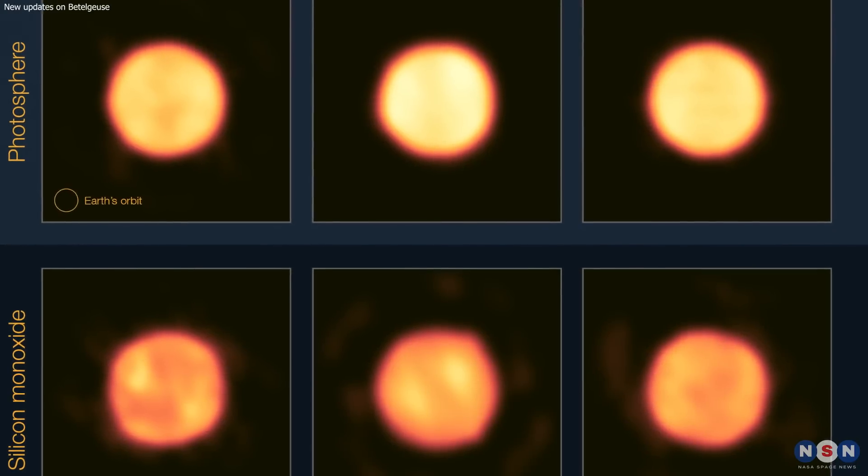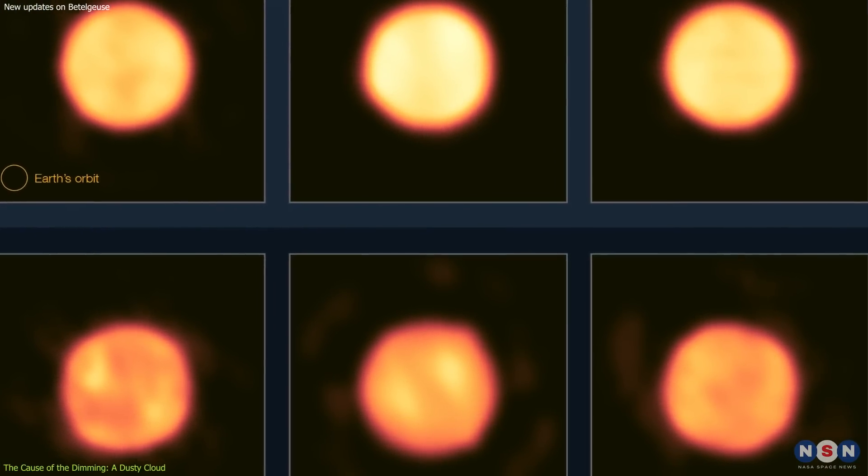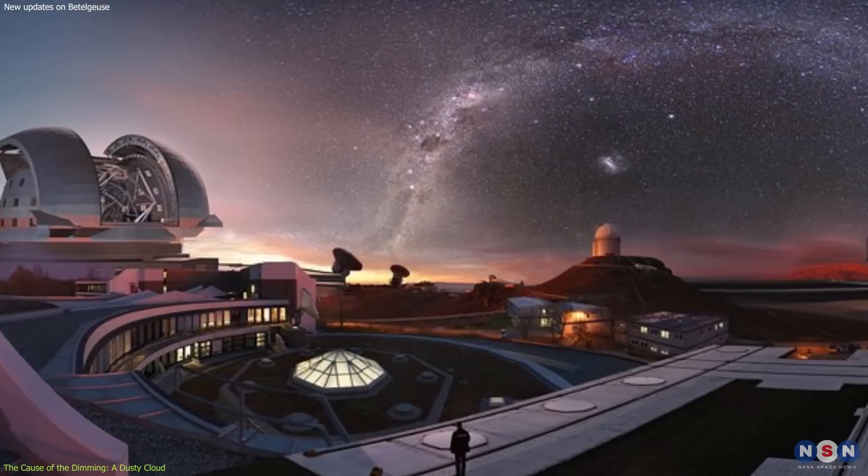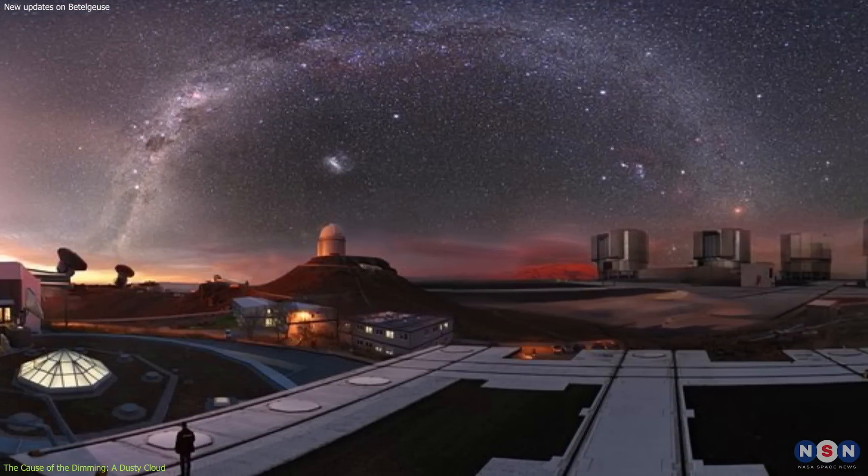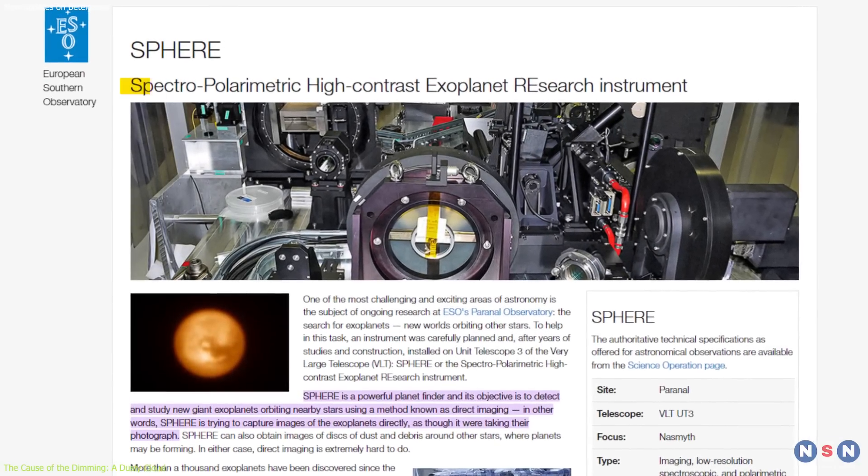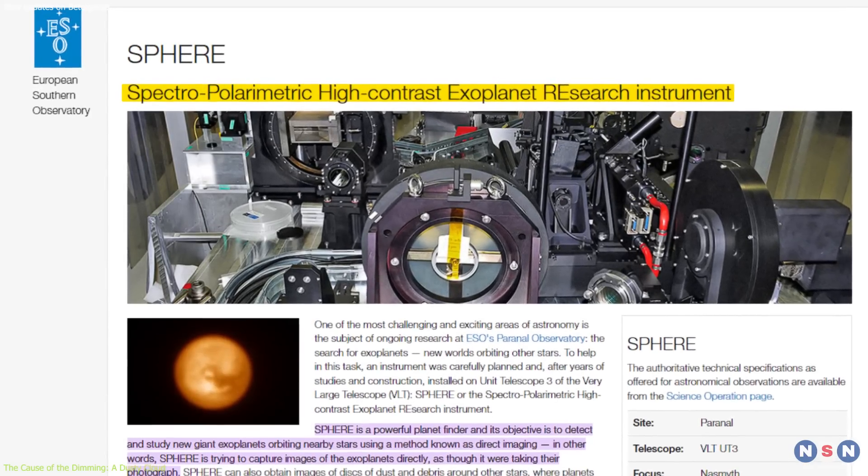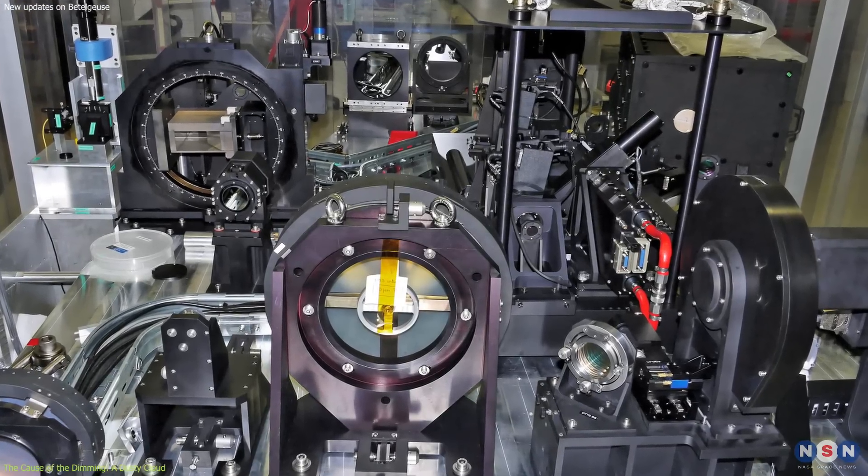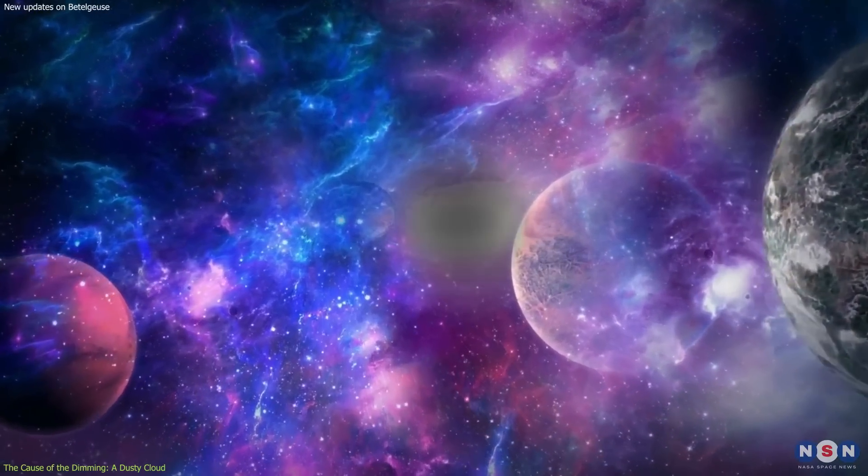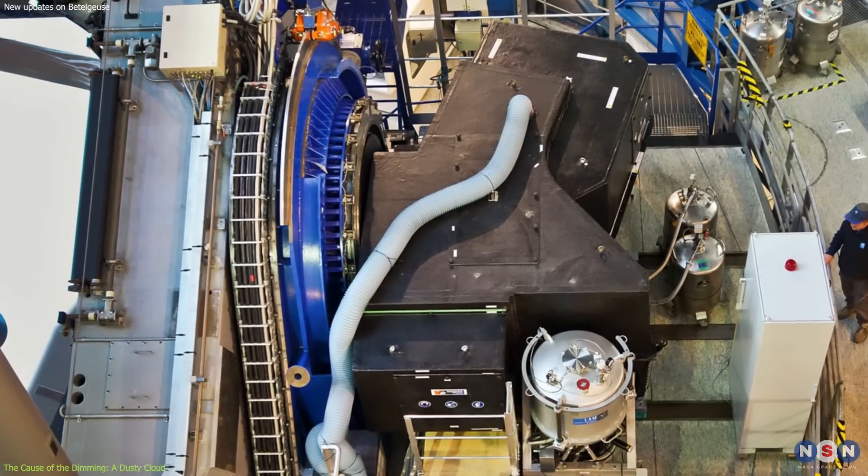The main findings of the new study are based on high-resolution images from the European Southern Observatory, ESO, which is an intergovernmental organization that operates some of the most advanced telescopes and instruments in the world, located in Chile. One of these instruments is called SPHERE, which stands for Spectropolarimetric High Contrast Exoplanet Research. SPHERE is designed to image and study exoplanets, or planets outside our solar system, by blocking out the bright light from their host stars. But SPHERE can also be used to image and study other objects, such as Betelgeuse.